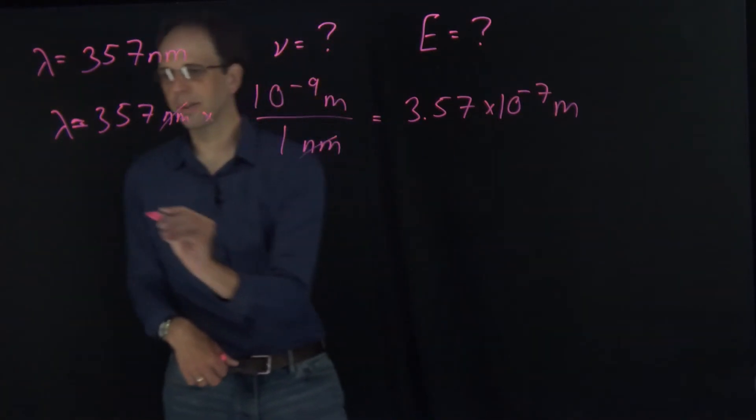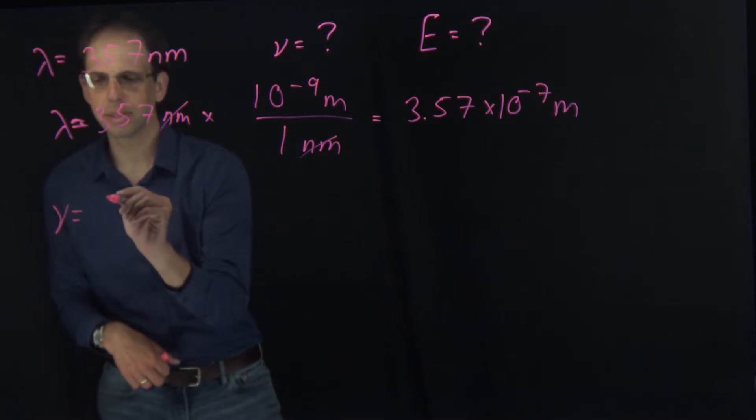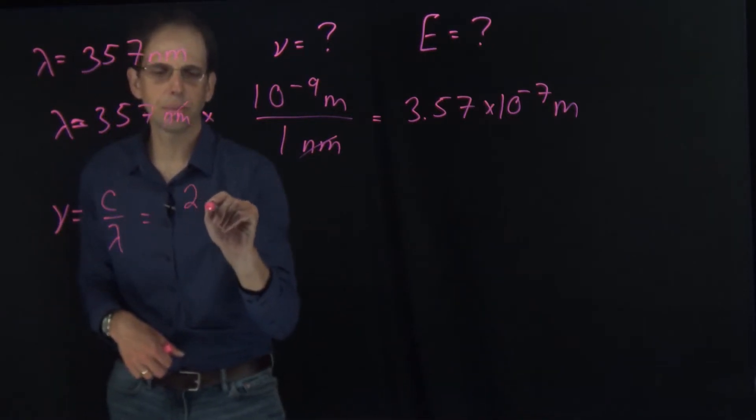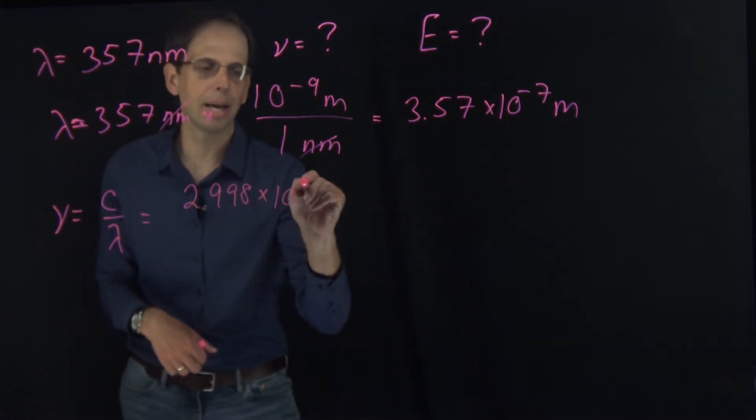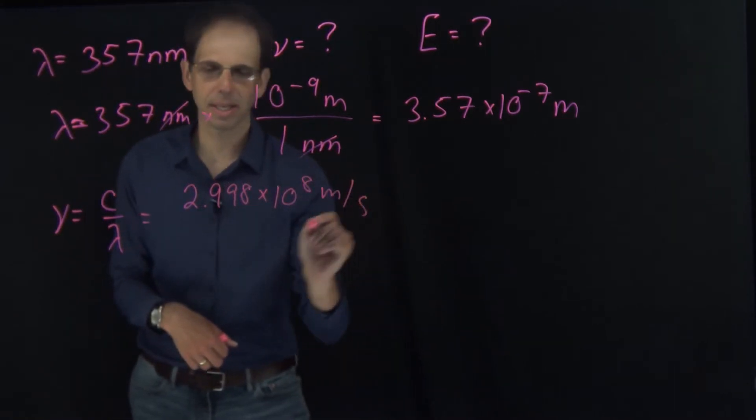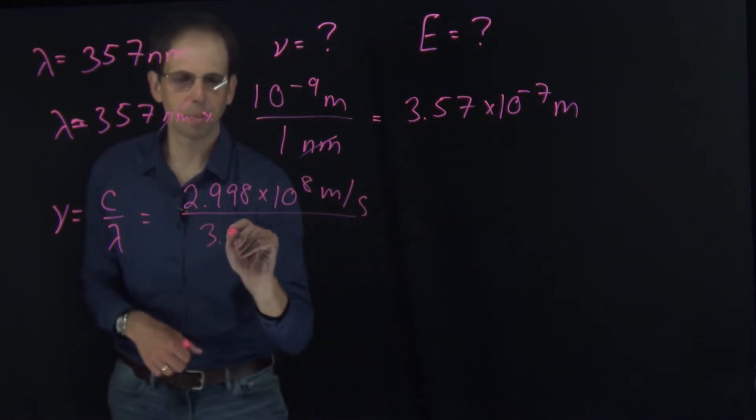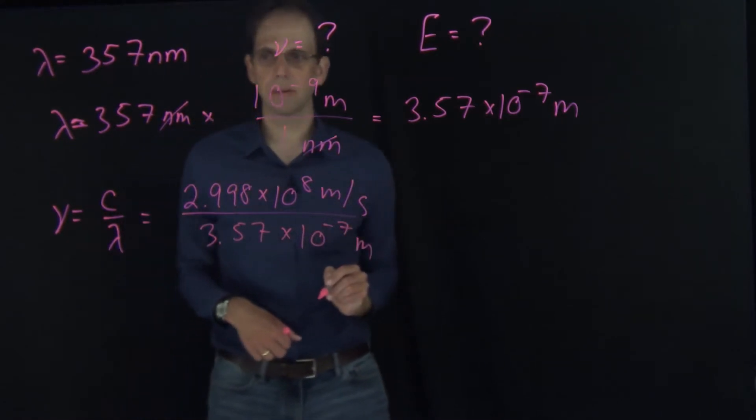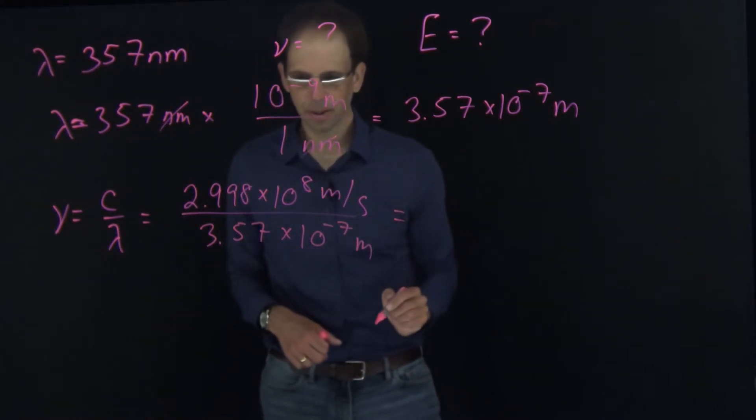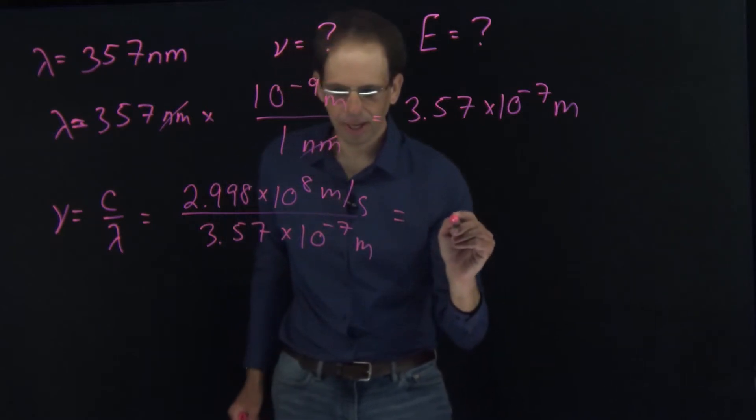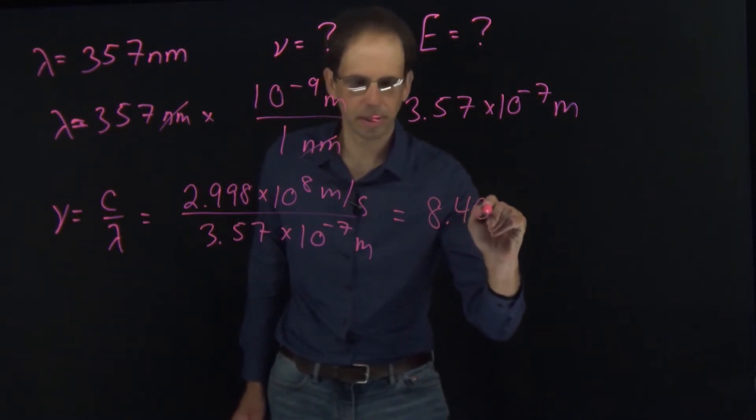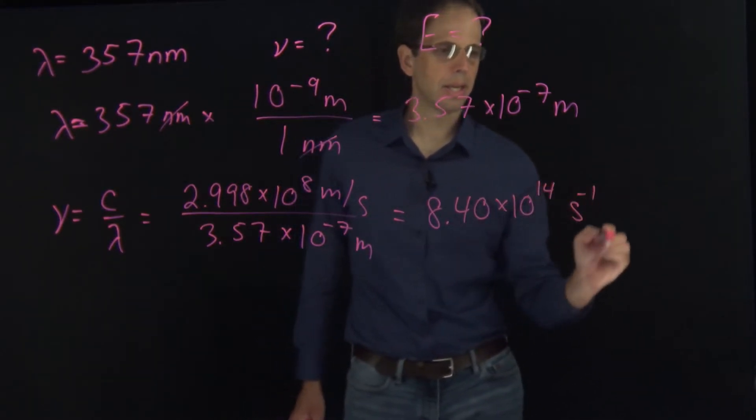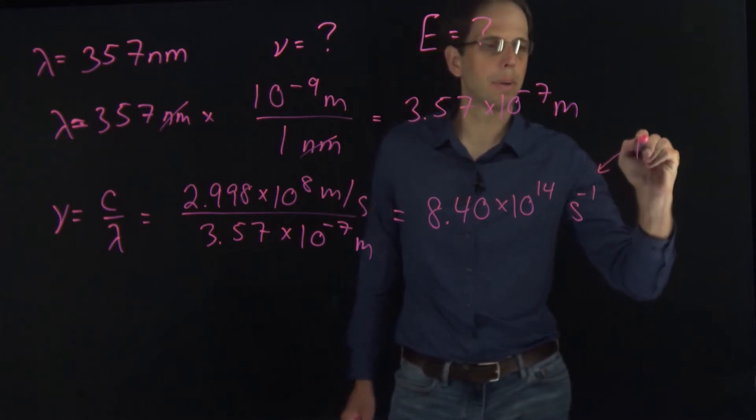Now, to calculate the frequency, I have frequency equals c over lambda. Again, c was 2.998 times 10 to the eighth meters per second. My wavelength is 3.57 times 10 to the minus 7 meters. And if I plug these into my calculator, I get 8.40 times 10 to the 14th inverse seconds.